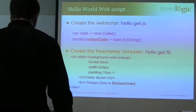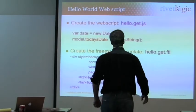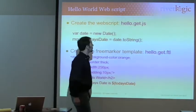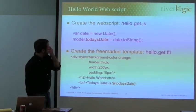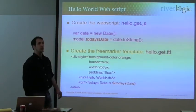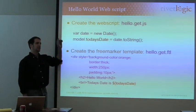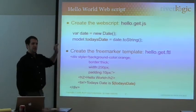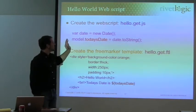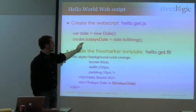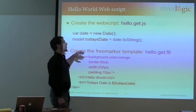What we have here is the hello.get.js, which is the JavaScript file and the controller. You're going to put that in the same directory with the descriptor file. This controller is really something — it gets a new date and makes sure that date is available to the presentation model.